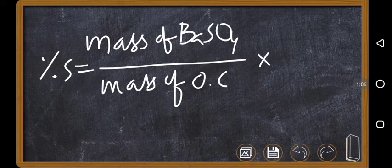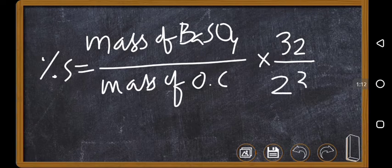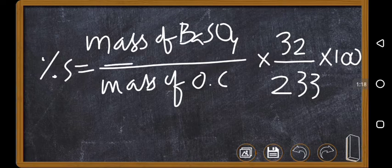multiplied by the sulphur atomic mass divided by the molecular mass of barium sulphate, 233, times 100. Mass of barium sulphate by mass of organic compound times 32 by 233 times 100.